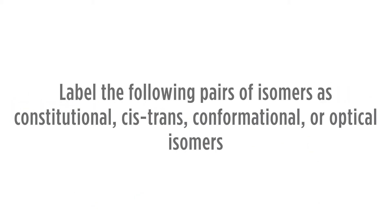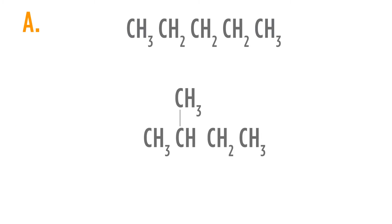Let's look at some problems. Label the following pairs of isomers as constitutional, cis-trans, conformational, or optical isomers. In the first pair, we see that we have five carbons in a straight chain where each carbon is connected to one other carbon. In the other structure, we see four carbons in a straight chain and one carbon attached to the second carbon, giving it three connections to carbon. Therefore, the connections are different and these will be constitutional isomers — there's a significant structural difference in the way the atoms are connected.